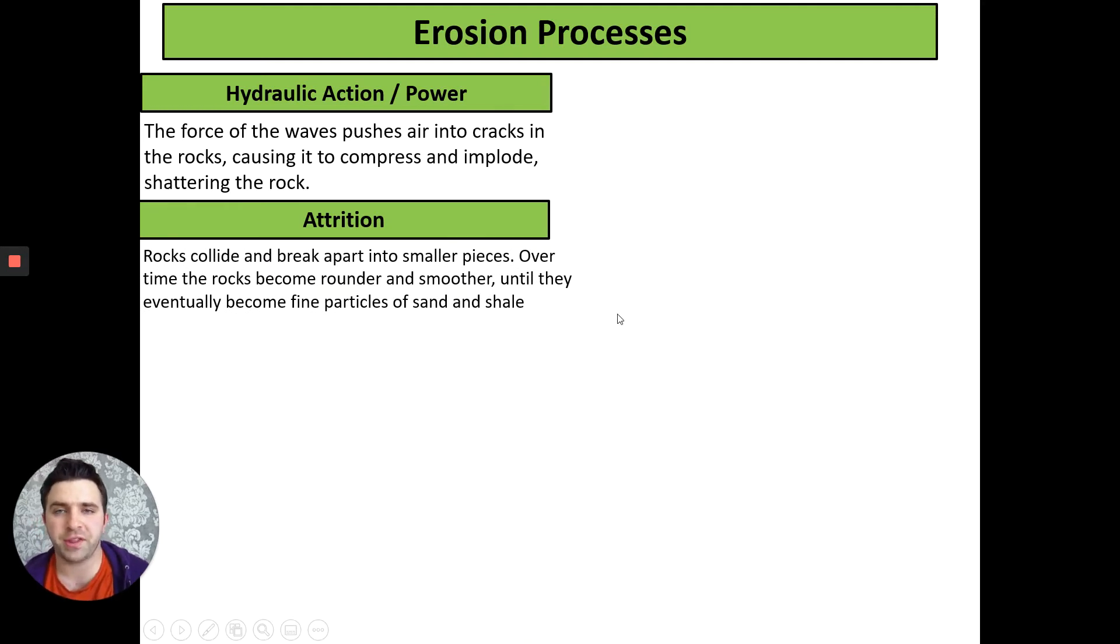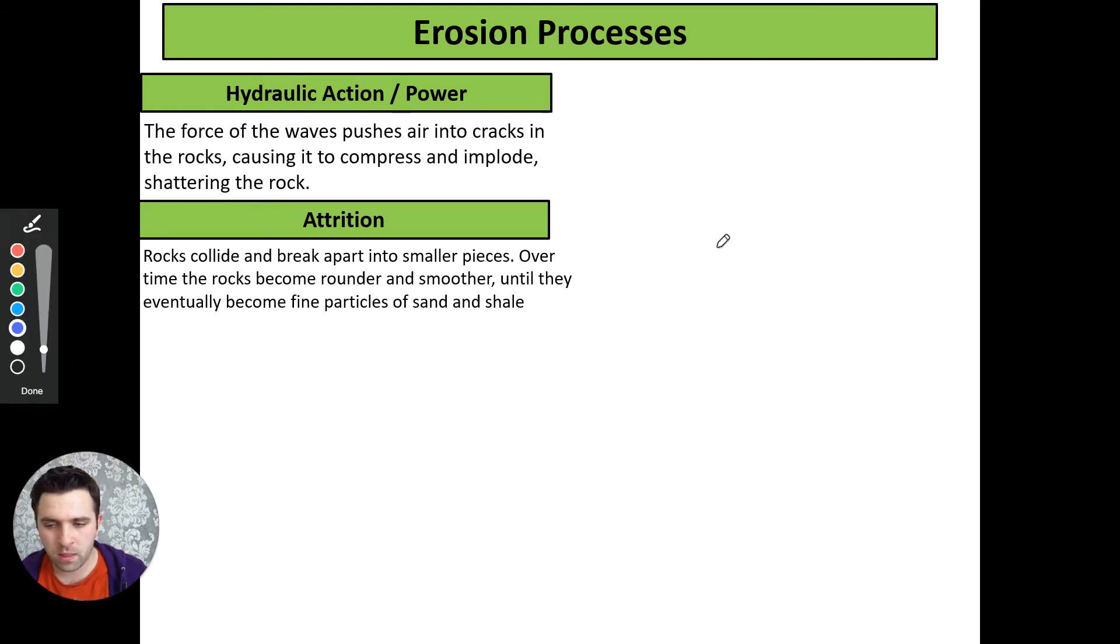Our second type is attrition. This is where two rocks collide together and they break down into smaller pieces. Over time these rocks become rounder and smoother, less angular, less jagged until they eventually become fine particles of sand and shale. The easiest way I can demonstrate attrition to you is like that. Two rocks smash together and break apart, going rounder and smoother. It's like imagining a washing machine filled with rocks. They're jumbling around, smashing into each other and that's why they break down. You've got one rock, another rock, these two rocks are colliding and small little pieces are breaking off.